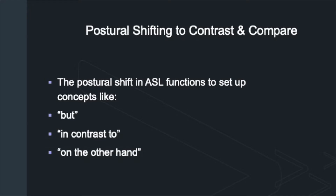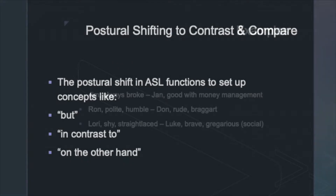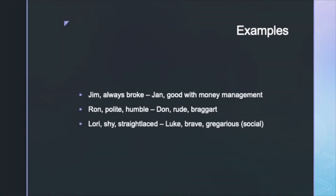Postural shifting in ASL is not just for dialogue. It also works to contrast and compare ideas or people. The postural shift functions to set up concepts like but, in contrast to, and on the other hand. In the following examples, I use postural shifting and the signing space set up to draw comparisons between two different people. Pay attention to the angle of my shoulders as I lean to the left or right, depending on the person I'm referring to.